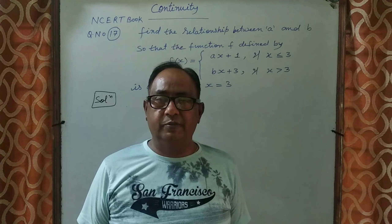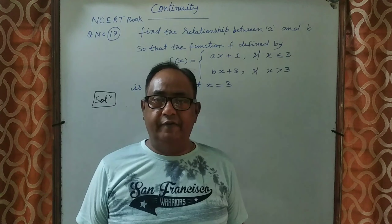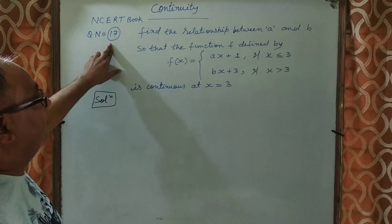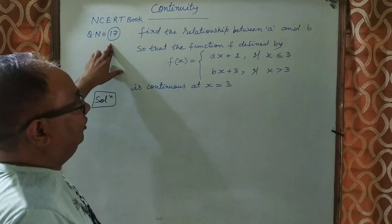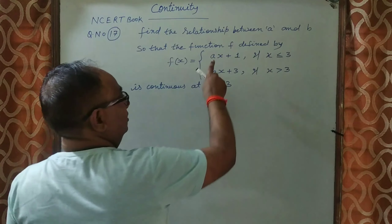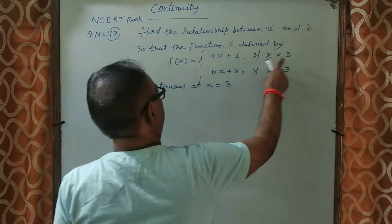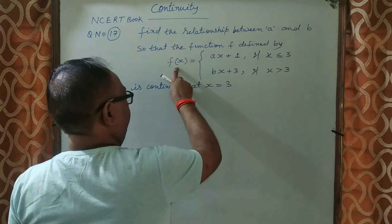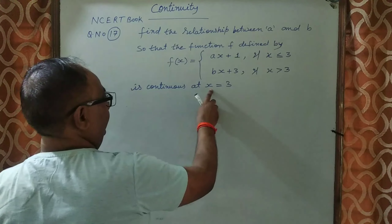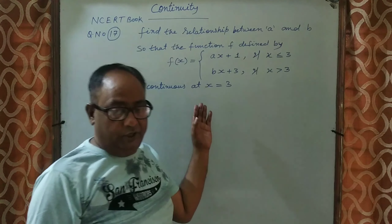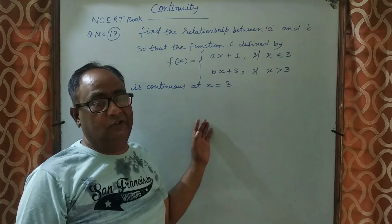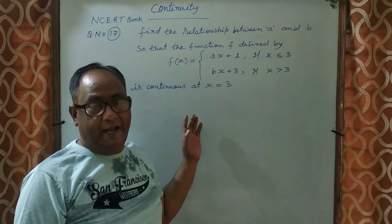Welcome students. Today we are going to ask a very important question — Question number 17 from NCERT. Find the values of a and b if the given function f(x) = ax + 1 when x ≤ 3, and f(x) = bx + 3 when x > 3, is continuous at x = 3. If our function is continuous, then LHL = RHL = f(3).